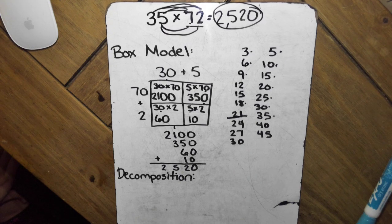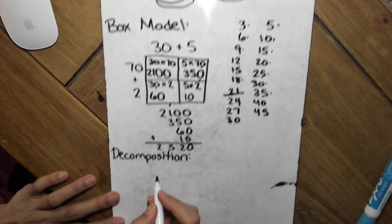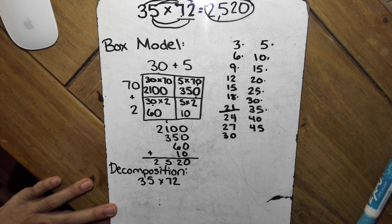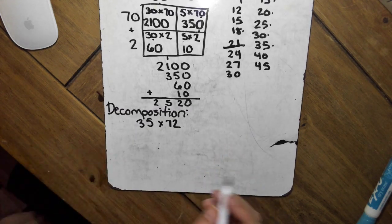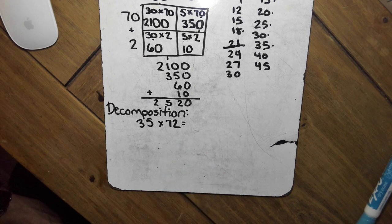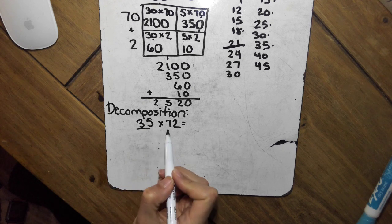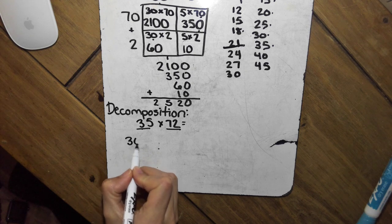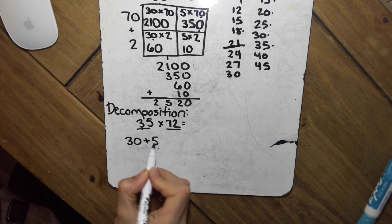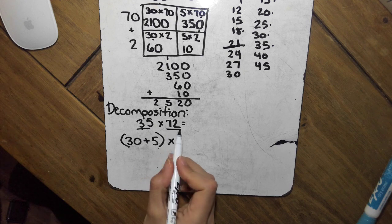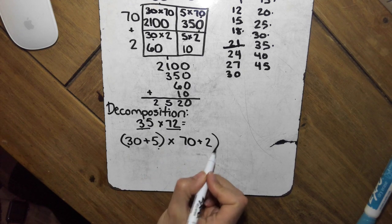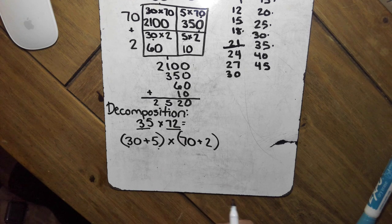All right, so let's look at how we would do the same problem. I'm going to rewrite it down here. 35 times 72, using the decomposition strategy. So our first step is to still put them in expanded form, each factor in expanded form. So here I have 35, or 30 plus 5, and then I'm going to multiply this by 70 plus 2, or 72.